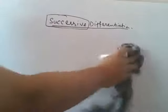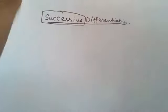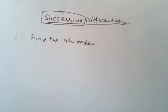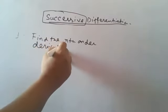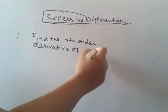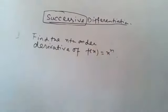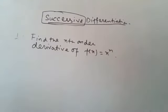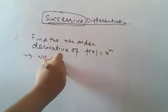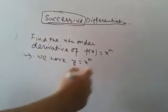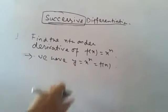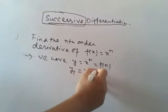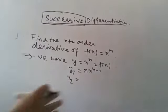The derivative of this function will be given here. So, y is equal to x to the power n. Find the nth order derivative of f(x) = x to the power n. If we take dy/dx, we denote it y1. So y1 is equal to n times x to the power (n−1). If we take the second derivative y2, which is d²y/dx², we get n(n−1) times x to the power (n−2).